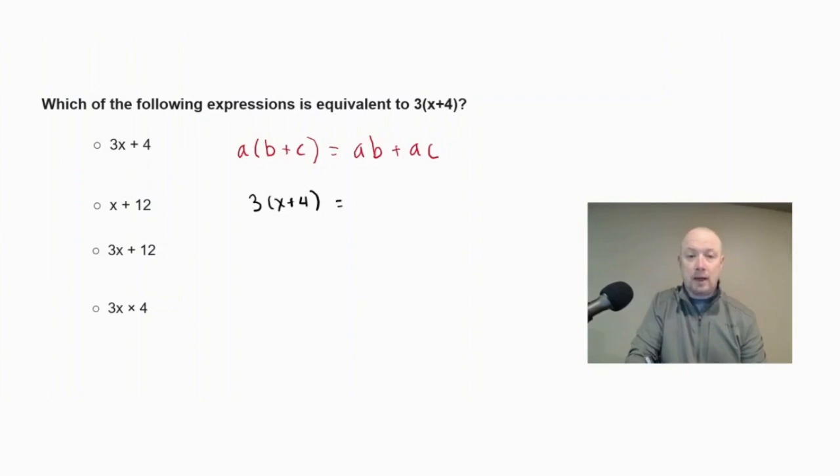We're going to multiply the three by x, so we would get 3x. We're going to multiply the three by four. So we're going to take three times four. So that would come out to be three times x plus three times four is 12. So our answer is 3x + 12.